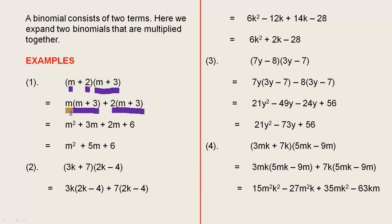m times m is m squared, m times 3 is 3m, 2 times m is 2m, and 2 threes are 6. And in some cases you can simplify by adding like terms. It doesn't always happen, but it does in some cases. So here we have m squared, 3m plus 2m is 5m, and there's our 6. So this binomial product has been expanded to give us that answer.